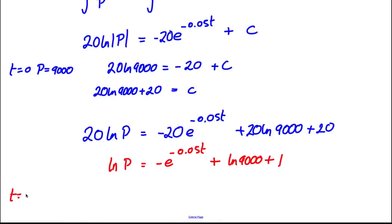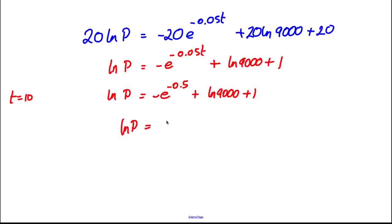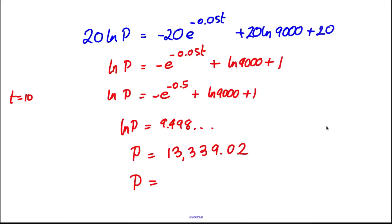When T is equal to 10, ln P is going to be negative e to the negative 0.05 times 10 plus ln 9000 plus 1. We can tap that into our calculator: negative e to the negative 0.05 times 10 plus ln 9000 plus 1. We get ln P equal to 9.498... Taking exponentials of both sides, P is 13,339.02. To three significant figures that rounds to 13,300.